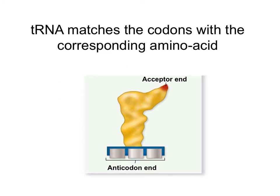Although the ribosome is the one orchestrating the reading of the messenger RNA, it is really the tRNA, or transfer RNA, that matches the sequence on the RNA with a particular amino acid. This tRNA has a three nucleotide sequence that is complementary to that of the messenger RNA, and it will match those three nucleotides to that of the RNA and match that with the corresponding amino acid. The transfer RNA has the complementary three nucleotides that read the messenger RNA in groups of three, and it has an acceptor end where it binds to the specific amino acid coded by that sequence.